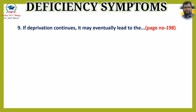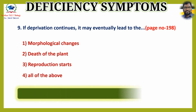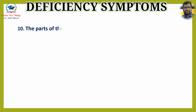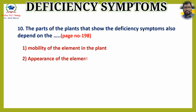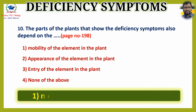Question 9: If deprivation continues, it may eventually lead to — options are 1) morphological changes, 2) death of the plant, 3) reproduction starts, 4) all of the above. The answer is option 2: death of the plant. Question 10: The parts of the plant that show the deficiency symptoms also depend on — option 1: mobility of the element in the plant. The answer is option 1.